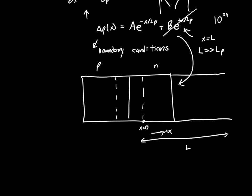With B equal to zero, our formula simplifies to just A times e to the minus x over L_P. So all we need to do now is find A, which we can do with our second boundary condition.